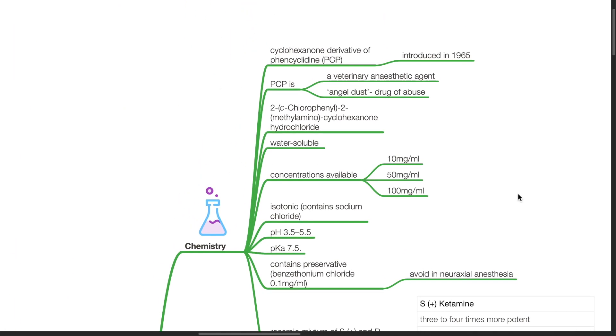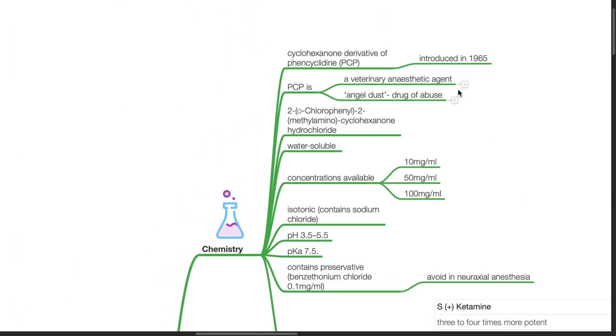Chemistry. Ketamine is the cyclohexanone derivative of phencyclidine, PCP, introduced in 1965. PCP is a veterinary anesthetic agent, also known as angel dust, which is a drug of abuse.